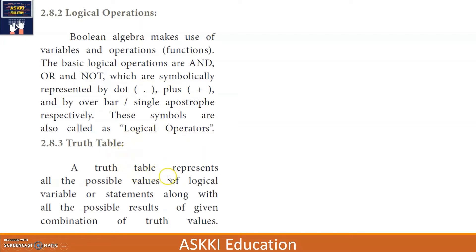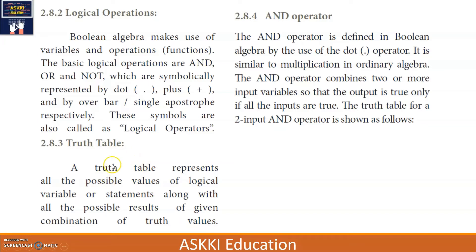Coming to the truth table — a truth table represents all the possible values of logical variables or statements along with all possible results of a given combination of truth values. We list input and output values for all possible combinations in a tabular column, which we call the truth table.